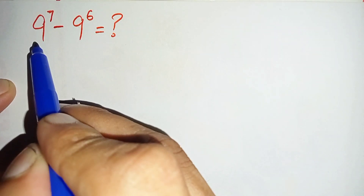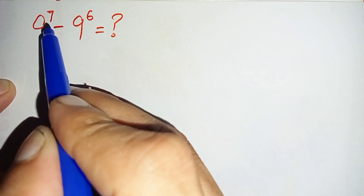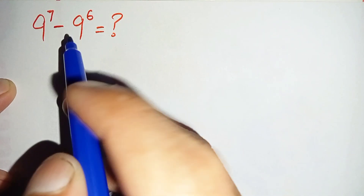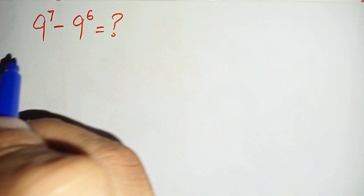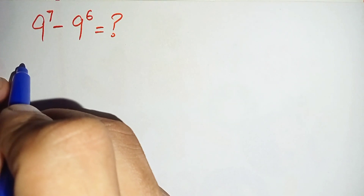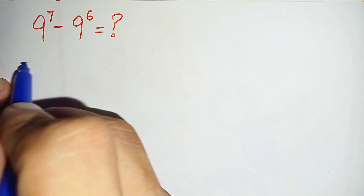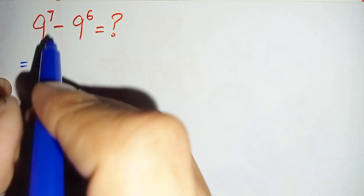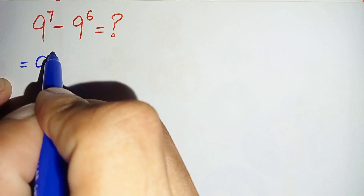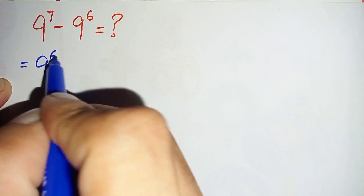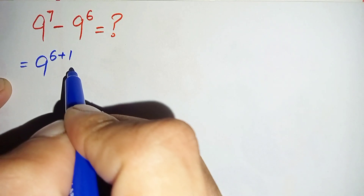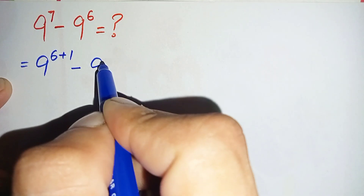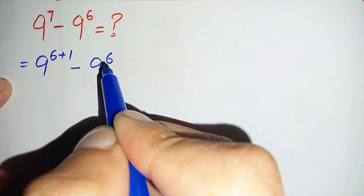First of all, we will change this 7 to the sum of 6 plus 1. So this will become equal to 9 raised to power 6 plus 1, minus 9 raised to power 6.